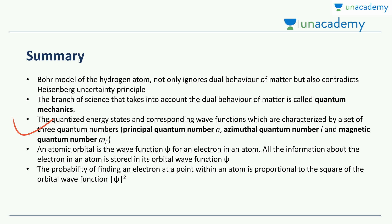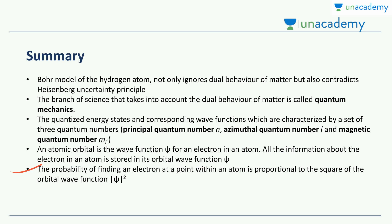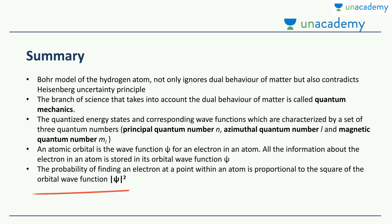Then we said that the energy of electrons exists only in quantized energy states, and this can be characterized using just three quantum numbers: the principal quantum number N, the azimuthal quantum number L, and the magnetic quantum number M. We also said that the atomic orbital is the wave function ψ of an electron in an atom, and all the information about the electron you'll ever need is stored in its orbital wave function ψ. Finally, the probability of finding an electron in a given space is directly proportional to the square of the orbital wave function, or ψ².